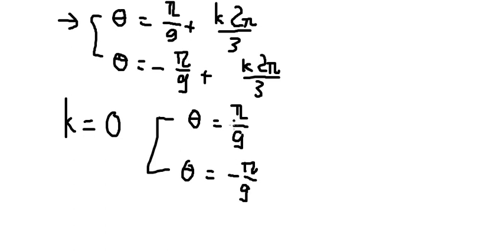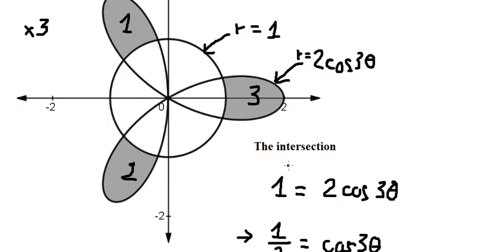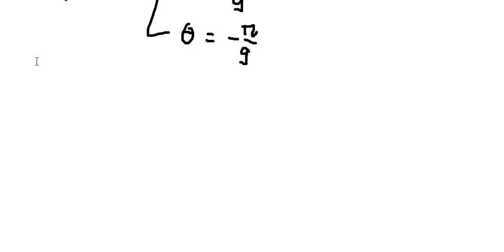We can see that these two values are symmetric. Ignoring the sign, they are the same magnitude, meaning the two regions are mirror images — one positive, one negative. So this area here is what we need.